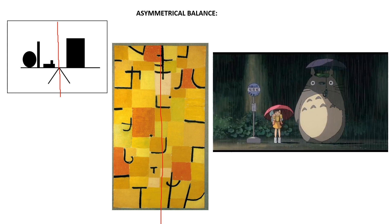And this still from the Miyazaki film My Neighbor Totoro — if we divide it in half, we have this big Totoro element here, just one thing, but it's very big and important. But it's balanced by two things: by the bus stop sign and by the young girl there waiting for the bus with her little sister on her back.